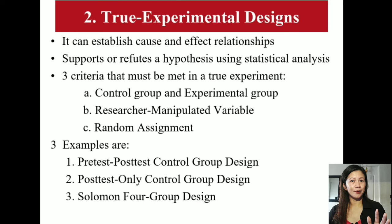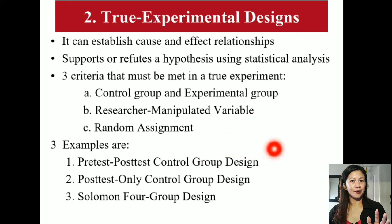True experimental designs can establish cause-and-effect relationships using statistical analysis to support or refute a hypothesis. Three criteria must be met: one, there must be two groups — one control and one experimental; two, there must be a variable manipulated by the researcher; and three, there should be random assignment. Three examples are: the pre-test post-test control group design, the post-test-only control group design, and the Solomon four-group design.